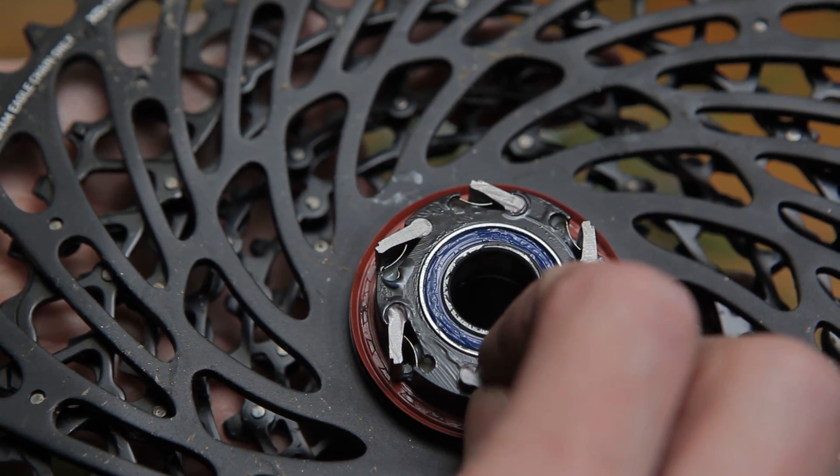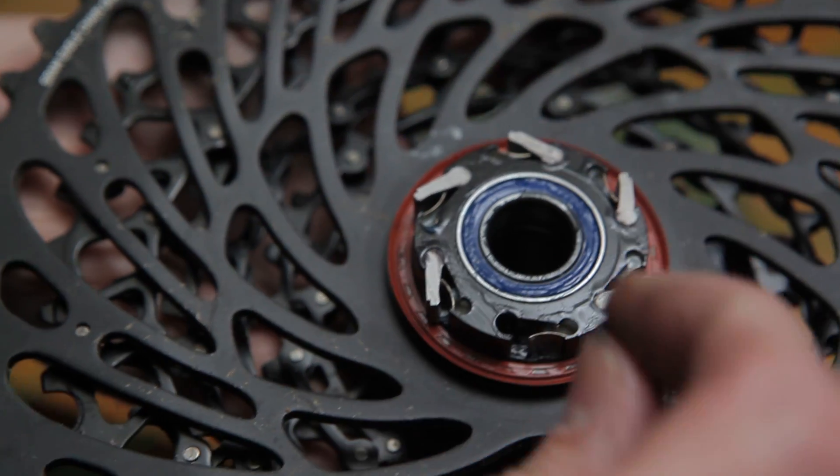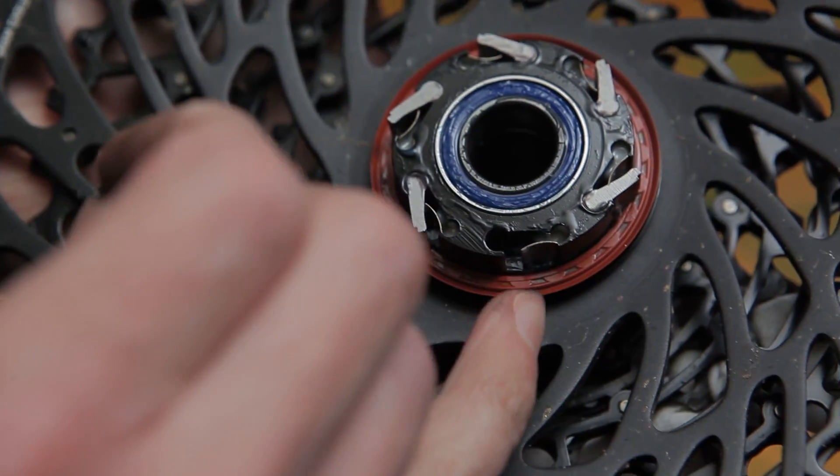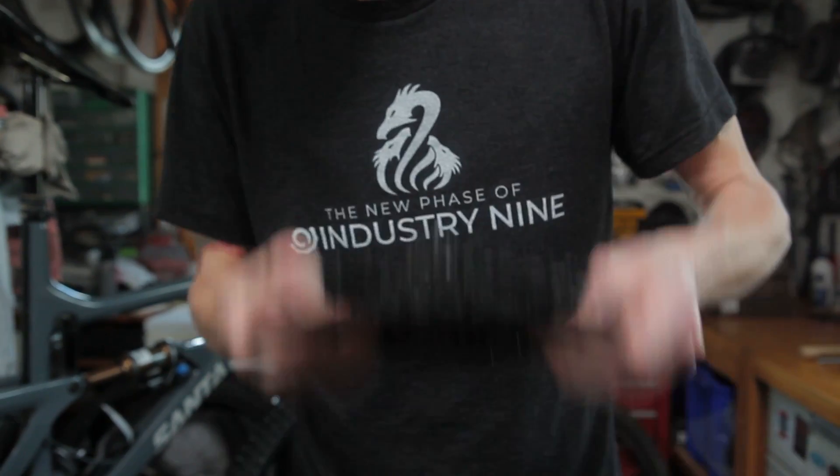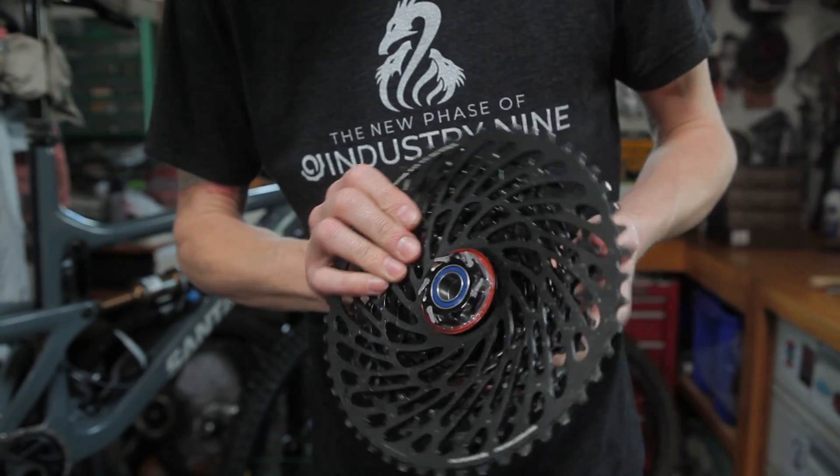As with Torch, the Hydra pawls and springs can be removed for cleaning. The leaf spring will hold its position in the seat even with the pawl removed.